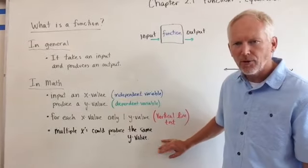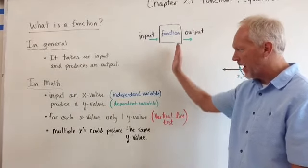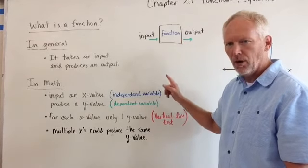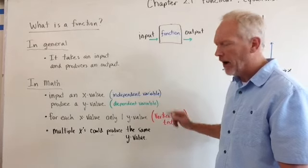Sometimes we'll refer to that as the vertical line test. It has to pass that vertical line test. We only have one x and then we get one y. We can't have two y values.